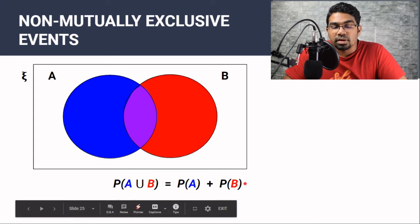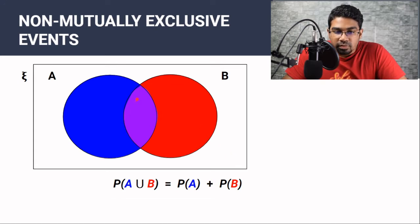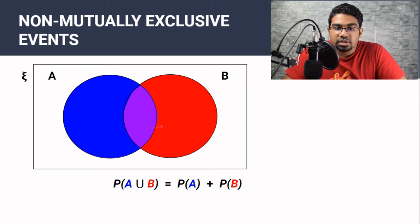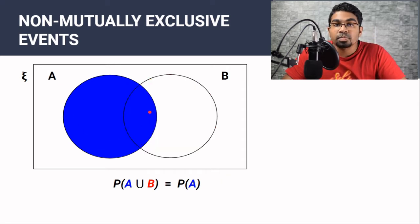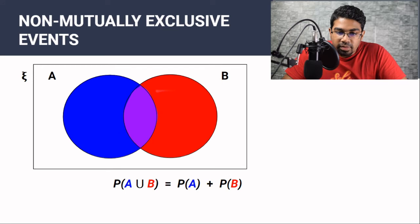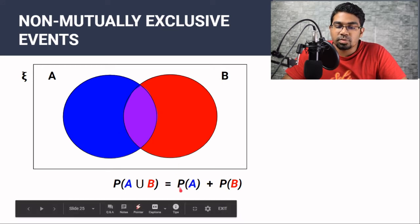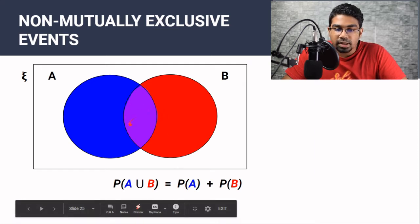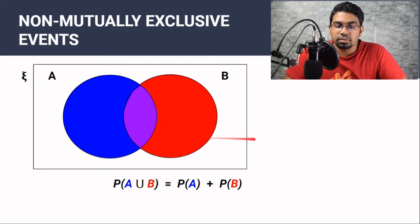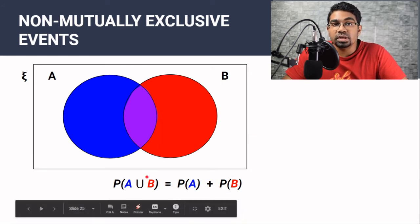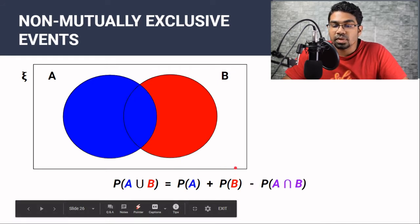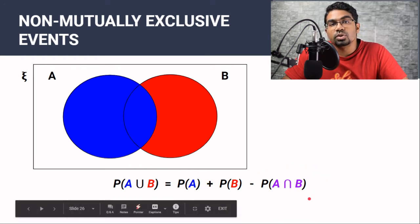But there is a problem here — if you look carefully, what we've done is we've added this purple region twice: once for A and once again for B. So it can't be just probability of A plus probability of B. We have to remove the part in the middle, which is A intersect B. Therefore, the probability of A union B is actually the probability of A plus the probability of B minus the probability of A intersect B. This is for non-mutually exclusive events.